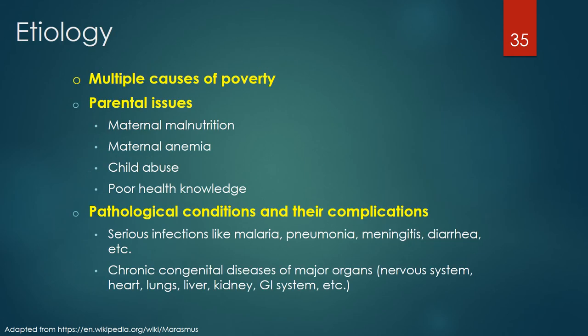Marasmus is caused by multiple factors including the multiple causes of poverty previously mentioned. Parental issues include maternal malnutrition, maternal anemia, child abuse, and poor parental health knowledge. Marasmus can also be caused by pathological conditions including serious infections like malaria, pneumonia, meningitis, diarrhea, and chronic congenital diseases of major organs like the nervous system, heart, lungs, liver, kidney, and gastrointestinal system.